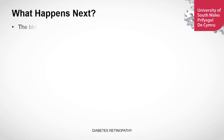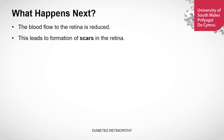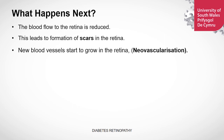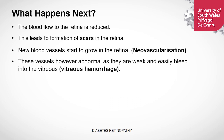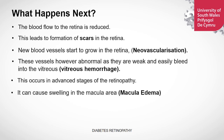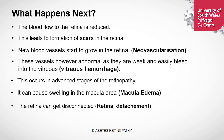What happens next? The blood flow to the retina is reduced. This leads to formation of new blood vessels in the retina. New blood vessels start to grow in the retina, which is known as neovascularization. These vessels, however, are abnormal and they are weak and they can easily bleed into the vitreous, known as vitreous hemorrhage. This occurs in the advanced stages of retinopathy. It can also cause swelling in the macular area, referred to as macular edema. The retina can also get disconnected, referred to as retinal detachment.